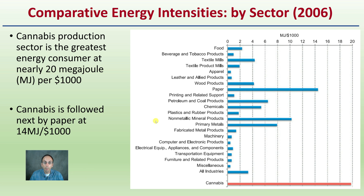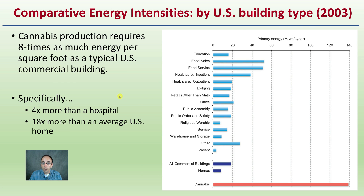How does cannabis compare to other industries? Using 2006 data by sector, the chemical production sector is the greatest energy consumer at nearly 20 megajoules per $1,000, followed by the paper industry at 14 megajoules per $1,000. Cannabis is, sadly, the clear winner in energy consumption compared to these other sectors. By U.S. building type, cannabis production requires eight times as much energy per square foot as a typical U.S. commercial building, four times more than a hospital, and about 18 times more than an average U.S. home — illustrating the massive primary energy demand of an indoor cannabis growing facility.